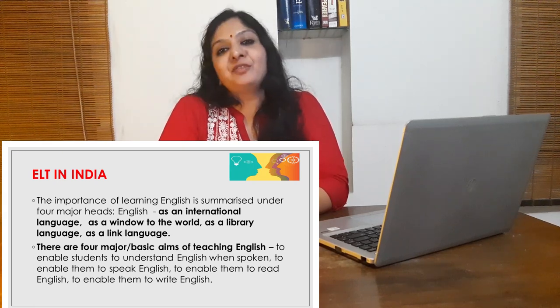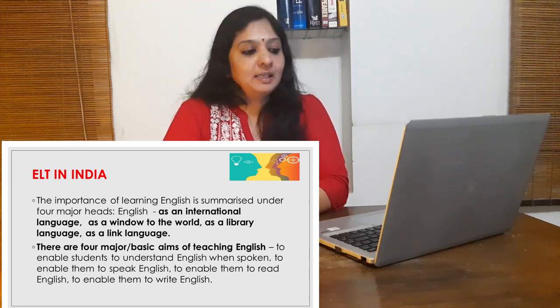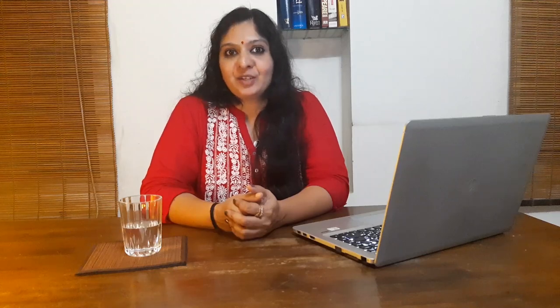There are four major basic aims of teaching English in India: to enable students to understand English when spoken, to enable them to speak in English, to enable them to read English, and to enable them to write English. Though productive measures are adopted to teach English in India, the conditions under which English is taught and learned are sometimes far from satisfactory. There is still a persistent cry about the falling standard of English in India. Researchers have identified general causes of falling standards: lack of clear-cut policy on the aims of teaching English, the dearth of competent teachers, wrong methods of teaching, defective textbooks, the faulty examination system, insufficient use of AVAs, and overcrowded classrooms and shortage of time. In 1952, the Madras English Language Teaching Campaign introduced the structural syllabus in teaching English. In 1954, the first English language teaching institute in India was established in Allahabad.